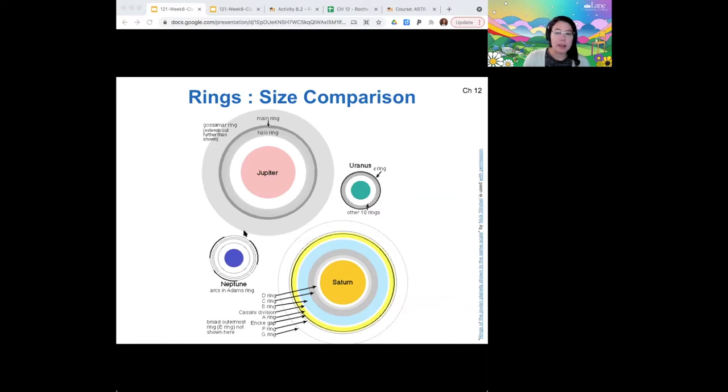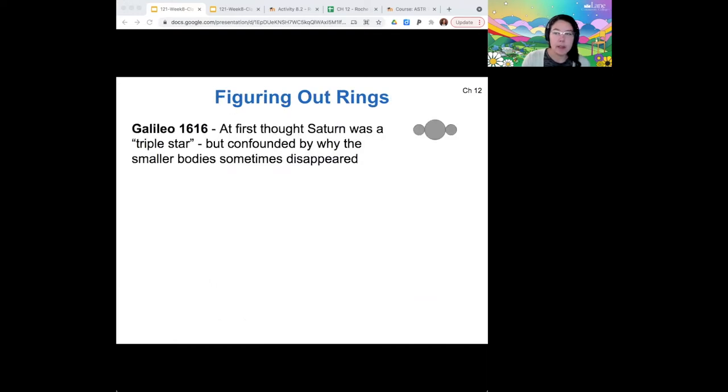The way that we figured out that planets had rings in the first place has a little bit of a history. Galileo in 1616 thought that Saturn was a triple star system because it looks like three bright points in a sort of lower quality telescope. The early telescopes were able to resolve those rings, but sometimes the smaller bodies disappeared, and so he was confused about how that could be the case if this was a triple star system.